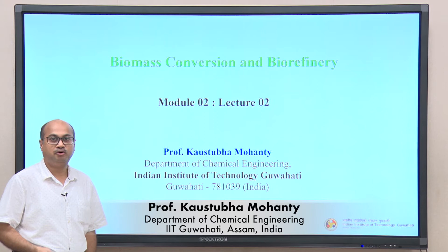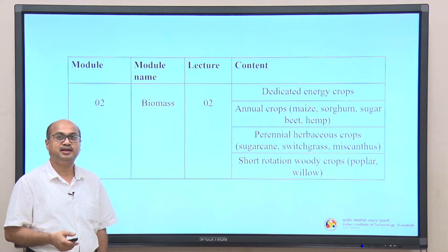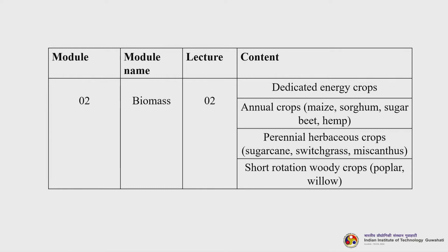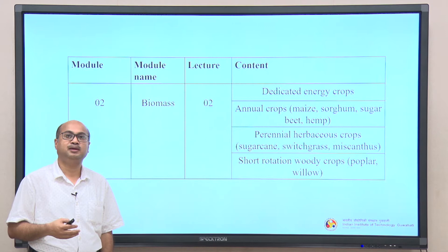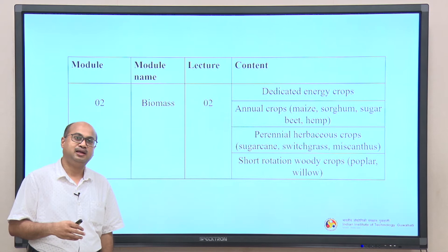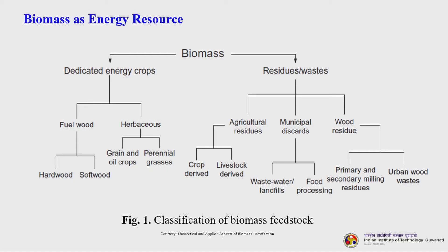Good morning, students. This is lecture 2 of module 2. In today's lecture, we will be discussing dedicated energy crops, including annual crops like maize, sorghum, sugar beet, hemp, and perennial herbaceous crops like sugarcane, switchgrass, miscanthus, and short rotation woody crops like poplar and willow — basically how they can be grown for bioenergy purposes, and their potential, land availability, and energy content.